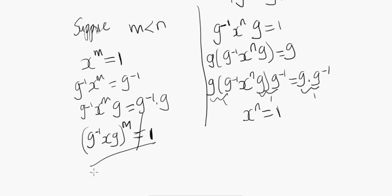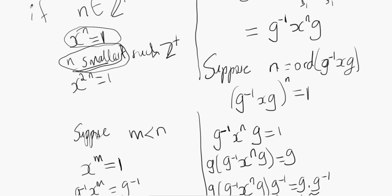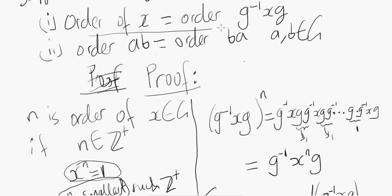But we already assumed that n is the order of g⁻¹xg, which means nothing smaller can work. Yet here we're getting some m less than n that also works — this is a contradiction. So this can never happen. That means the assumption that such an m less than n exists was wrong. Therefore, the smallest positive integer such that x to the n equals 1 is indeed n, which means the order of x equals n. We've just proved that the order of x equals the order of g⁻¹xg, which is exactly what we needed to prove.